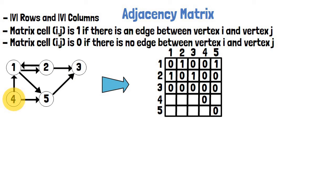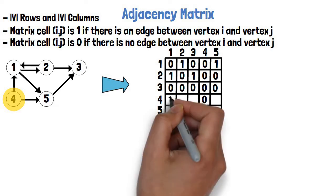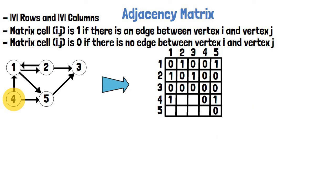Moving to vertex 4, it has two outgoing edges to vertices 1 and 5, so we write 1 in those cells and 0s in the rest of the fourth row. Lastly, vertex 5 has only one outgoing edge to vertex 3, so we write 1 in that cell and 0 in all other cells of the fifth row. And we're done with the directed graph example.